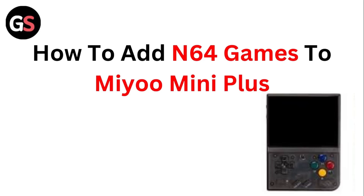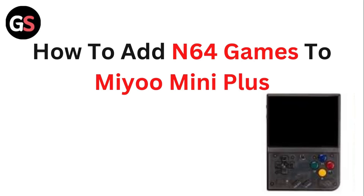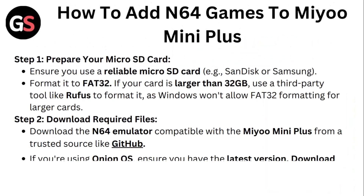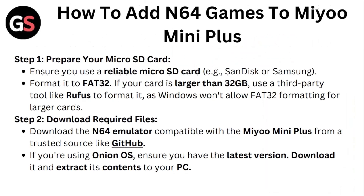Step 1: Prepare your micro SD card. Ensure you use a micro SD card from SanDisk or Samsung, then format it to FAT32. If your card is larger than 32GB, use a third-party tool like Rufus to format it, as Windows won't allow FAT32 formatting for larger cards.